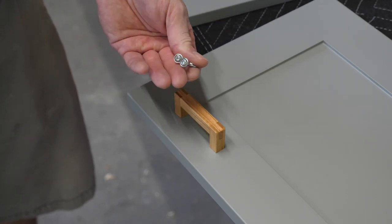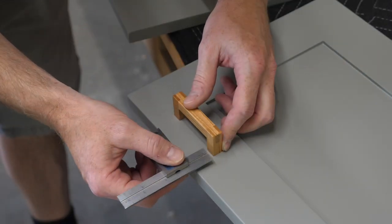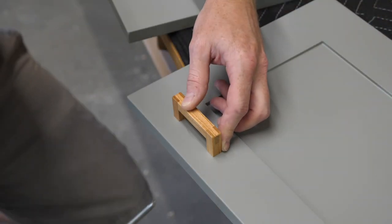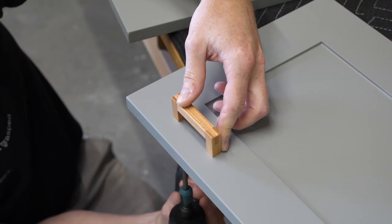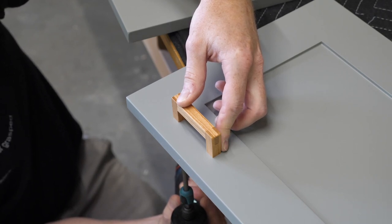I think these are called round washer head screws. At any rate, these will be used to hold the handles in place. The pilot hole that I used left a little play, so I double checked that the handles are parallel with the edge of the door.